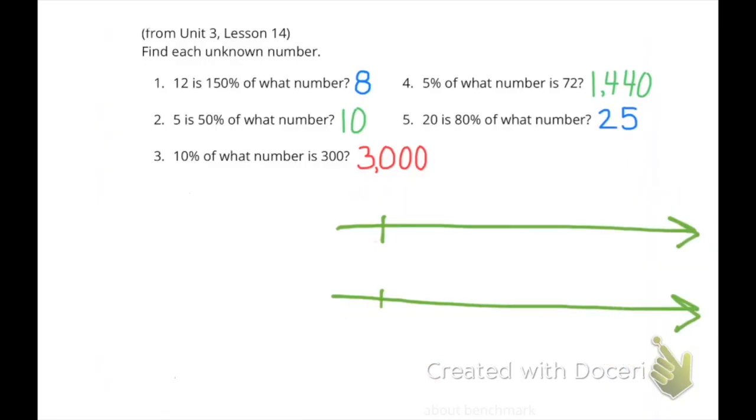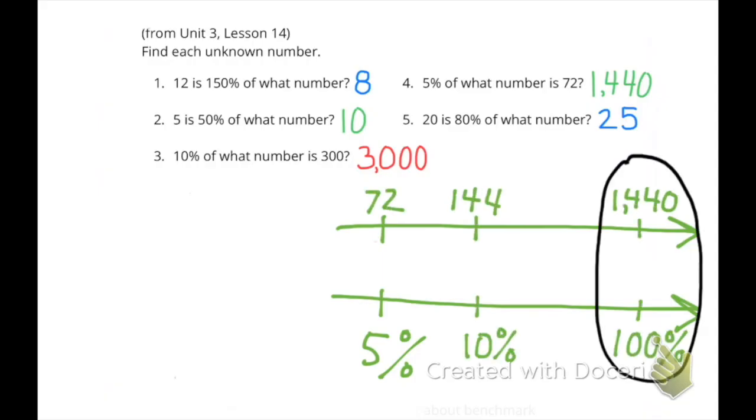Number four. Five percent of what number is seventy-two? Five percent is seventy-two. Five percent times two is ten percent. Seventy-two times two is a hundred and forty-four. Ten percent times ten equals a hundred percent. One hundred forty-four times ten equals one thousand four hundred forty. Five percent of one thousand four hundred forty is seventy-two.